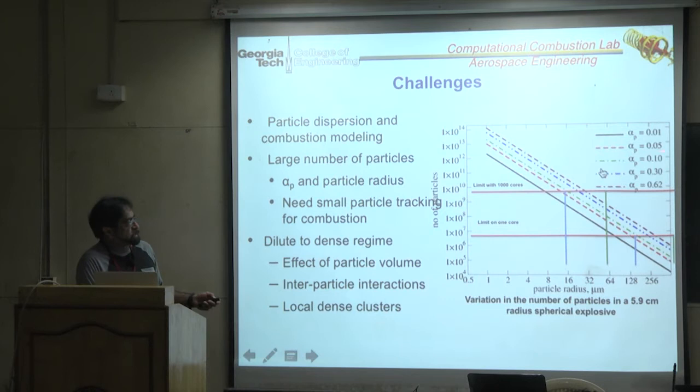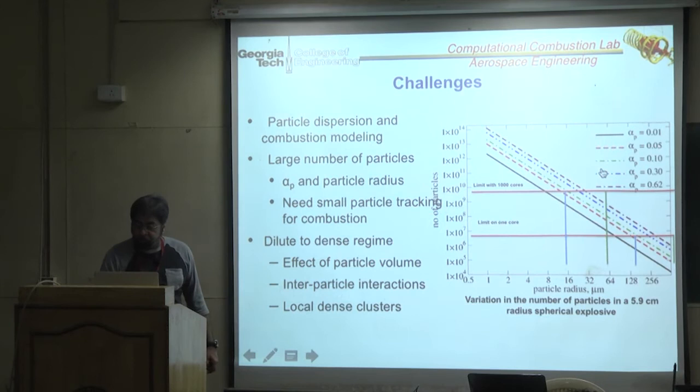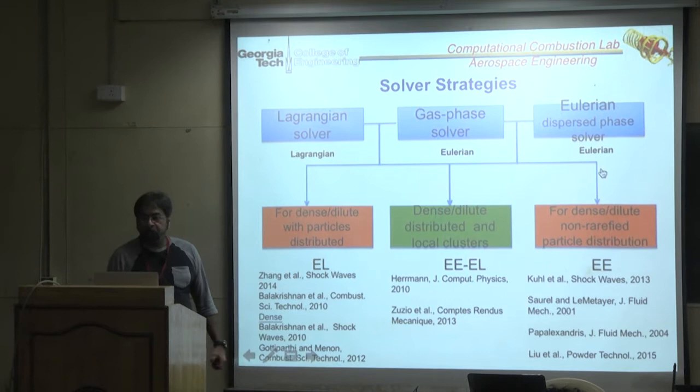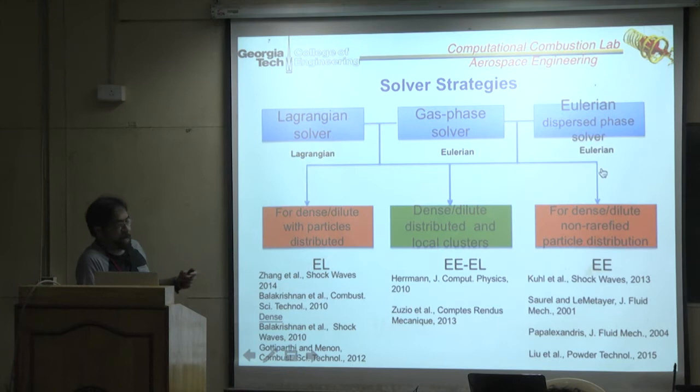The hybrid approach we have been using is the classical method: an Eulerian solver for the gas phase and a Lagrangian solver for the particle phase, where you track each particle or parcel in a Lagrangian sense. The two phases are coupled through source terms.